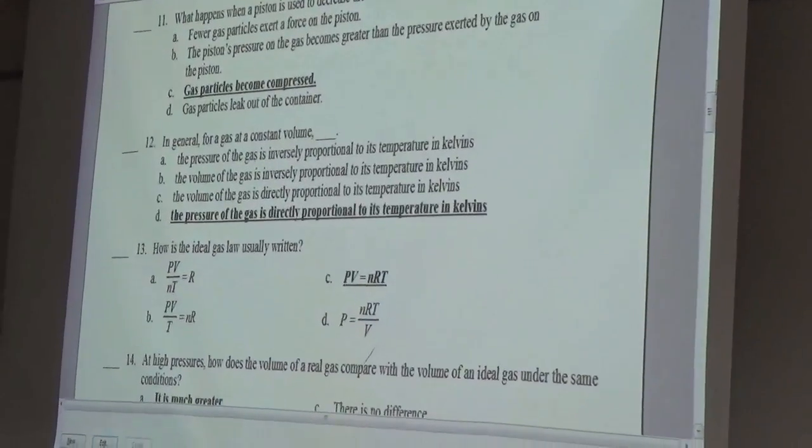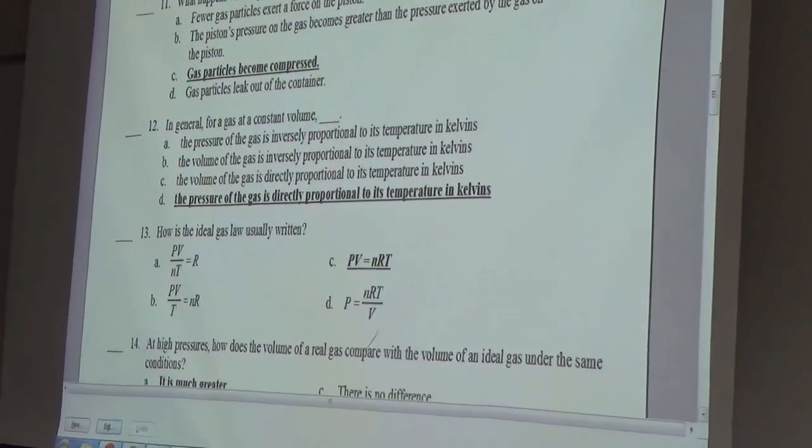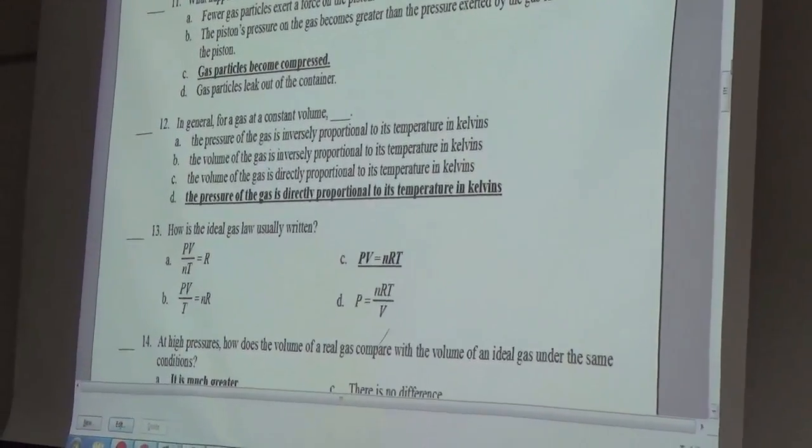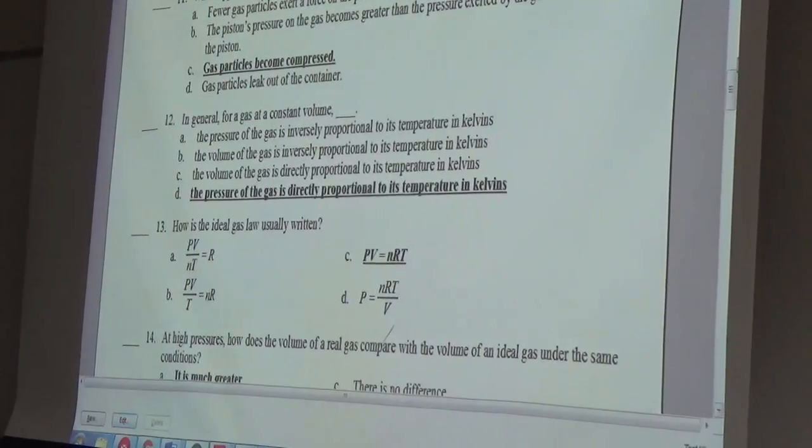In general, for a gas at a constant volume, C, the pressure of the gas is directly proportional to the temperature in Kelvin.